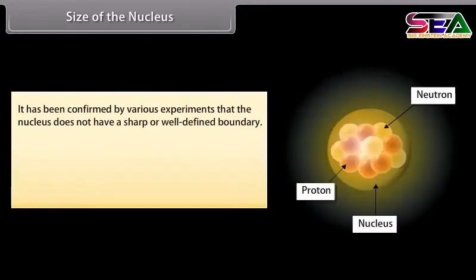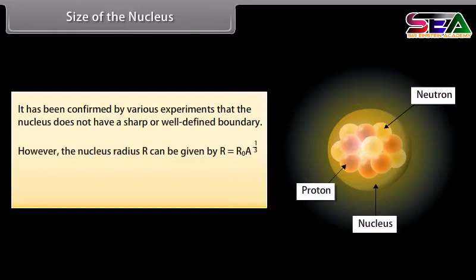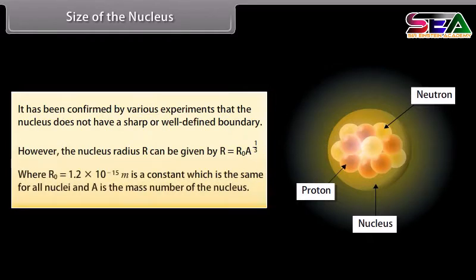Size of the nucleus: It has been confirmed by various experiments that the nucleus does not have a sharp or well-defined boundary. However, the nucleus radius R can be given by R = R₀ × A^(1/3), where R₀ = 1.2 × 10⁻¹⁵ m is a constant which is the same for all nuclei, and A is the mass number of the nucleus.